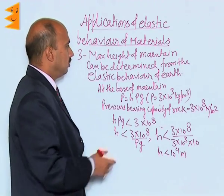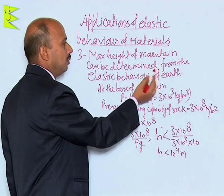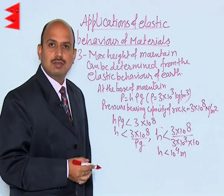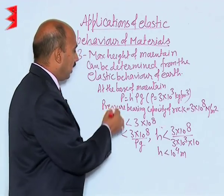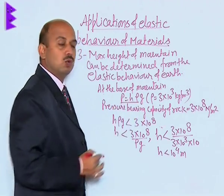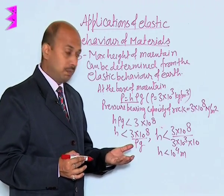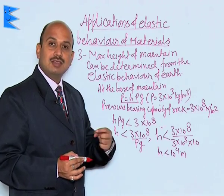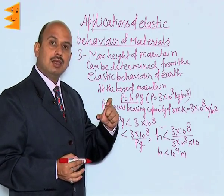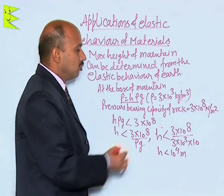The third application is that the maximum height of a mountain on Earth can be determined from the elastic behavior of the Earth. At the base of a mountain, pressure is equal to H·ρ·g, where H is the height of the mountain, ρ is the density of the mountain material, and g is the acceleration due to gravity.